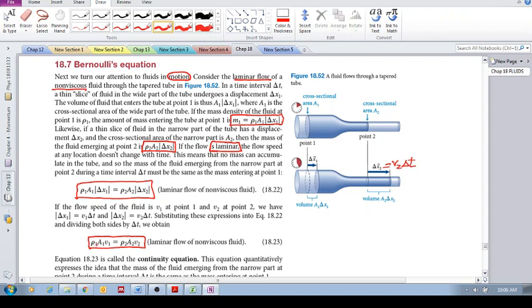Rho, the density at this point of the fluid, multiplied by the air, cross-sectional area, multiplied by the velocity of the fluid, is equal to the density over here, the cross-sectional area over here, and the velocity over here. And this is called the continuity equation.